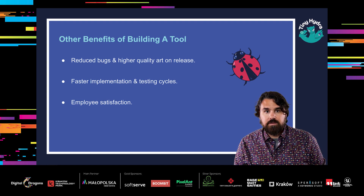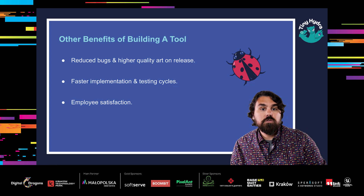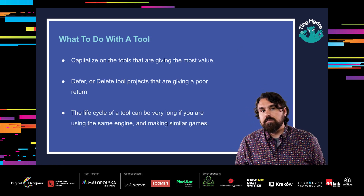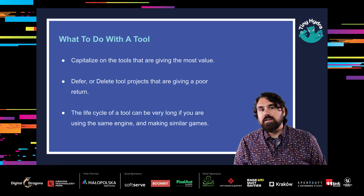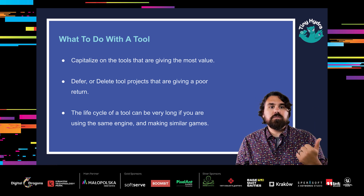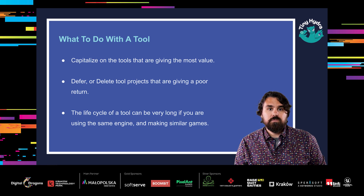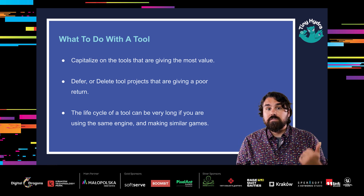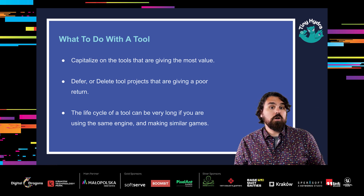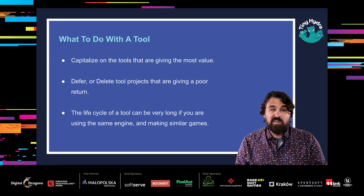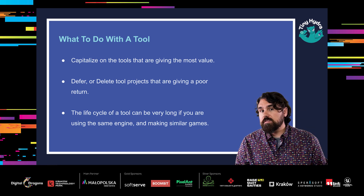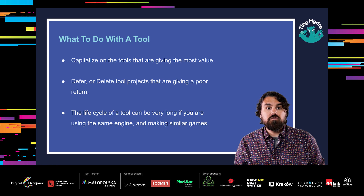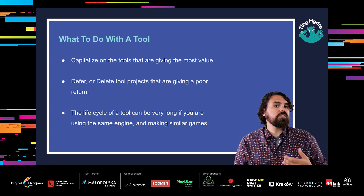So you have this tool — what do you do with it? If you invest some time into thinking about the return you're getting from the tools you build, you can make effective use of that information. Capitalize on the tools that are giving the most value: look for ways to expand and improve on them, improve the user experience, and maybe build some internal training around their use. Defer or delete tool projects that are giving a poor return — those that are very slow to be adopted or causing just as many problems as they solve. The life cycle of a tool can be very long if you're using the same engine and making similar games; there's no reason you can't use a tool for the next game or even the next several.